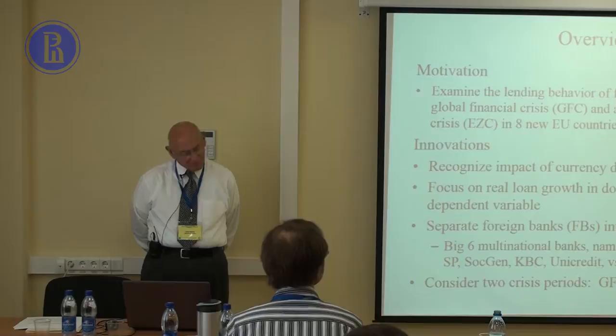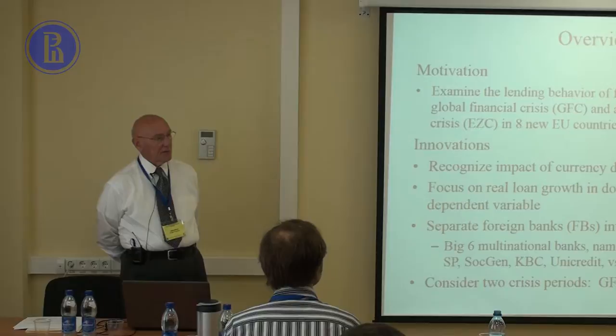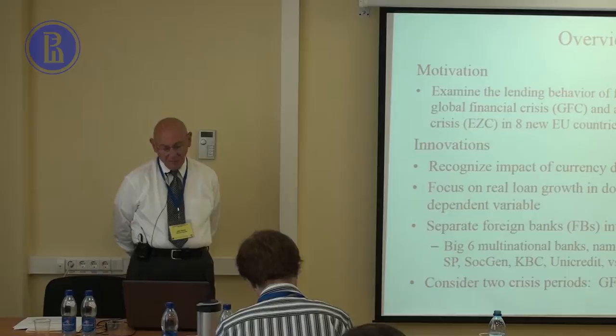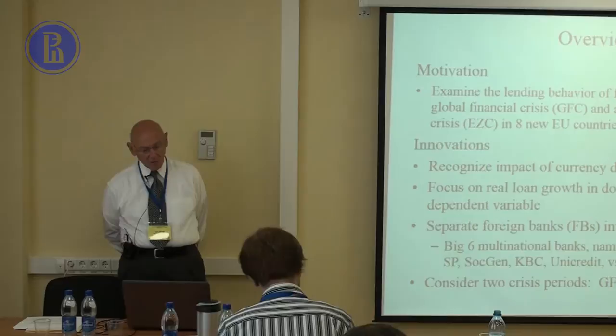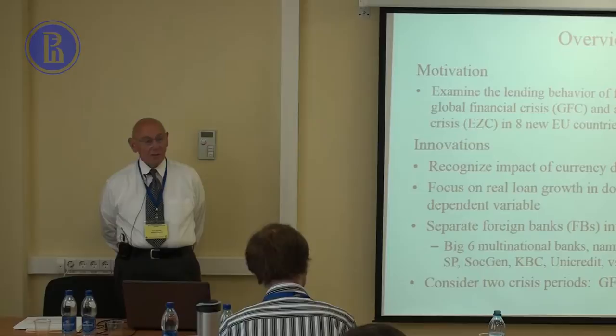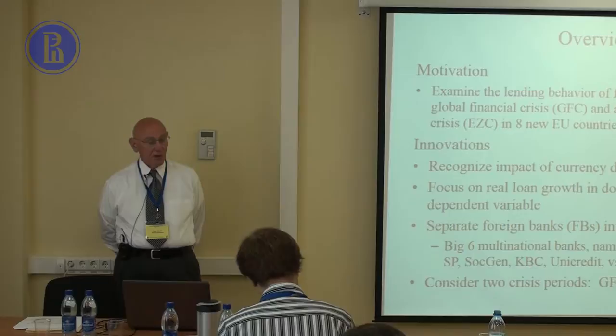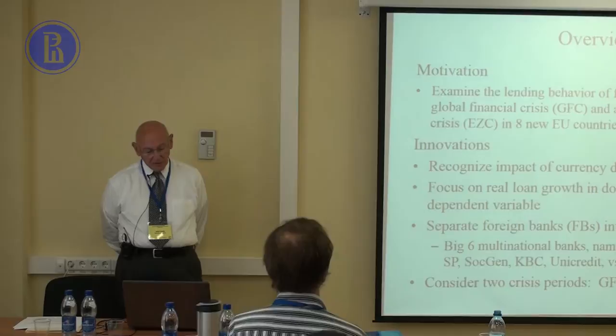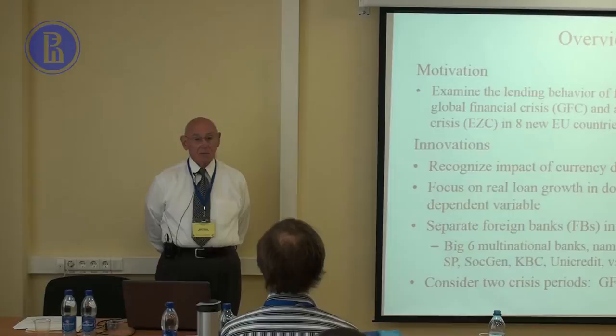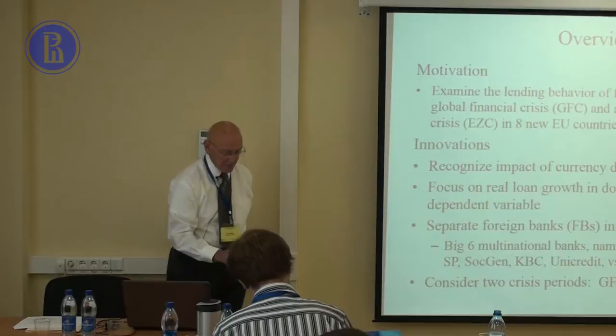Most importantly, we separate the foreign banks into two categories: what I am now referring to as the Big Six — namely Raiffeisen, Erste, Intesa San Paolo, Societe Generale, KBC, and Unicredit — and we separate these out from the other foreign banks. Virtually all the other literature of which I'm aware does not do this; they just have a foreign bank dummy. We consider this a very important distinction because these banks have a very different business model in the region than other foreign banks. And we consider the two crisis periods which I mentioned before.